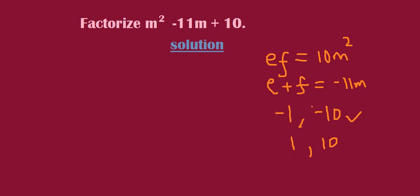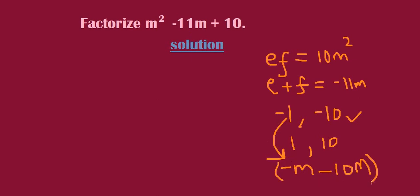We are now going to split the middle term using this combination of numbers — negative 1 and negative 10. We write it in this form: negative m minus 10m. So instead of having negative 11m, we substitute this combination, giving us m squared minus m minus 10m plus 10.